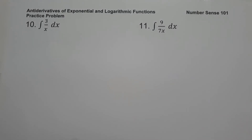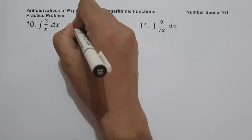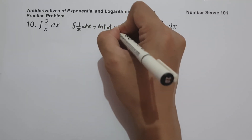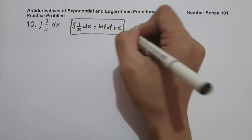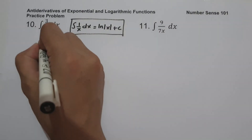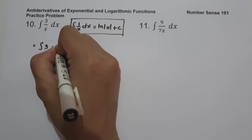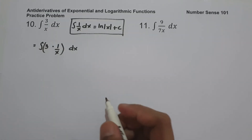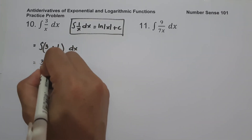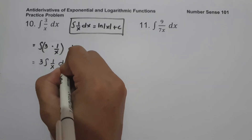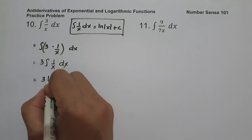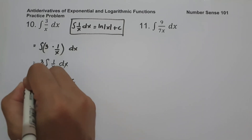On number ten, what is the antiderivative of 3/x dx? We use the formula: the antiderivative of 1/x dx = ln|x| + c. We rewrite 3/x as 3 · (1/x), move the constant in front, and get 3 times the antiderivative of 1/x dx, which equals 3 ln|x| + c. That is our answer.